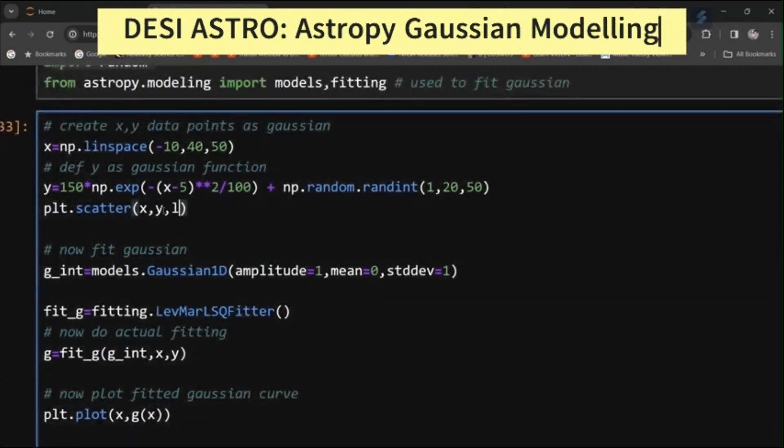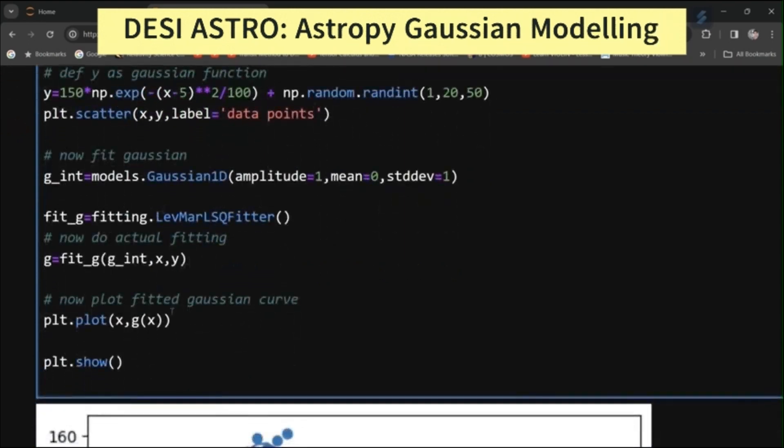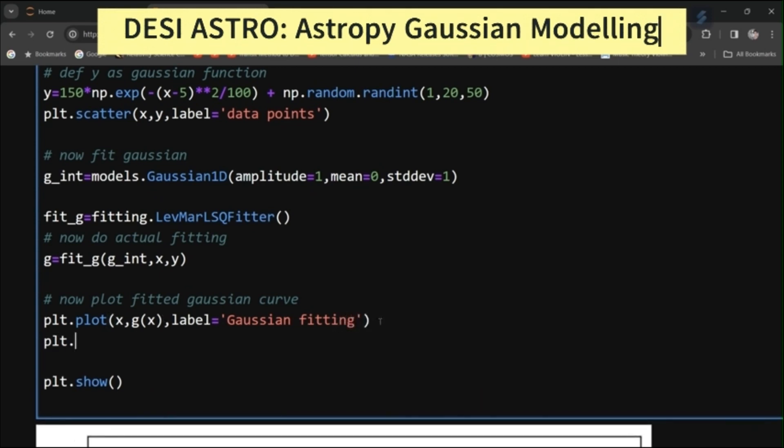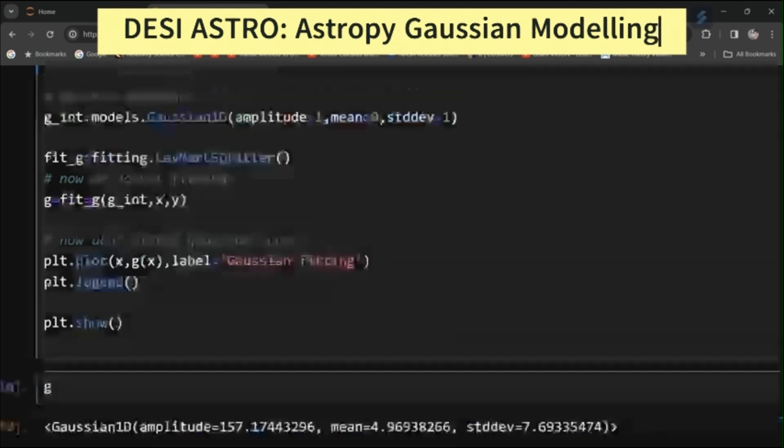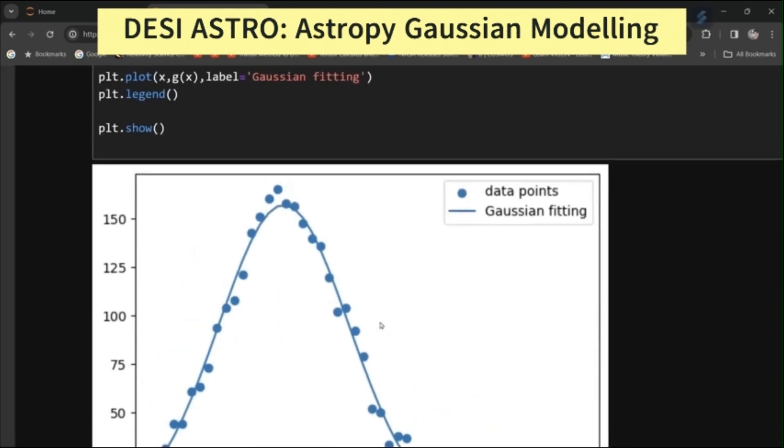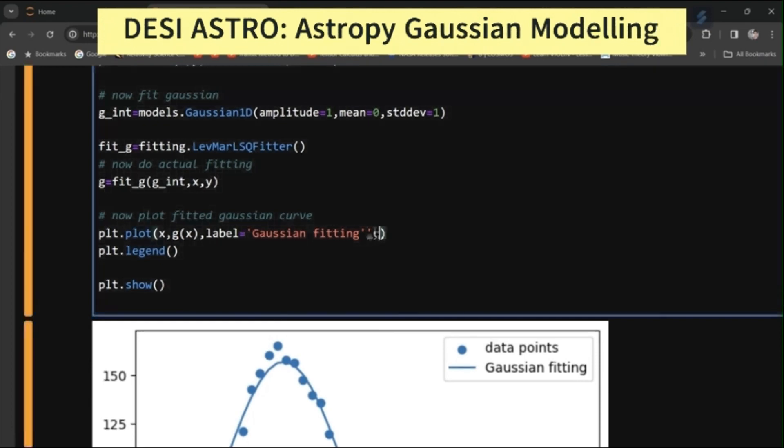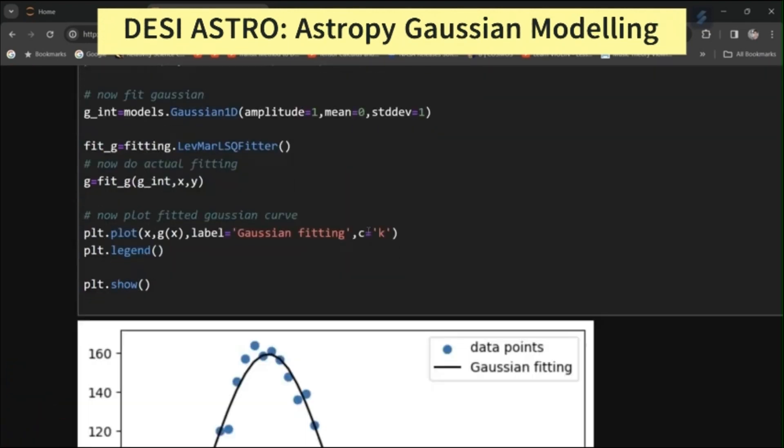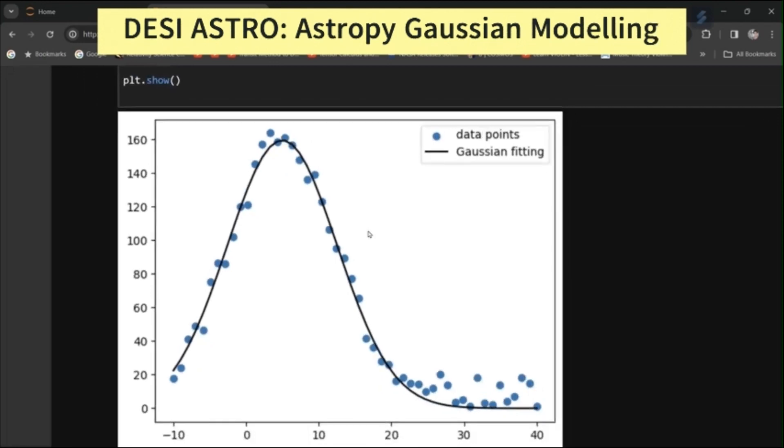Just call here label equal to data points. And give here label equal to Gaussian fitting. And just simply give here plt.legend. And you can also give different color to these plots. You can give color equal to k.